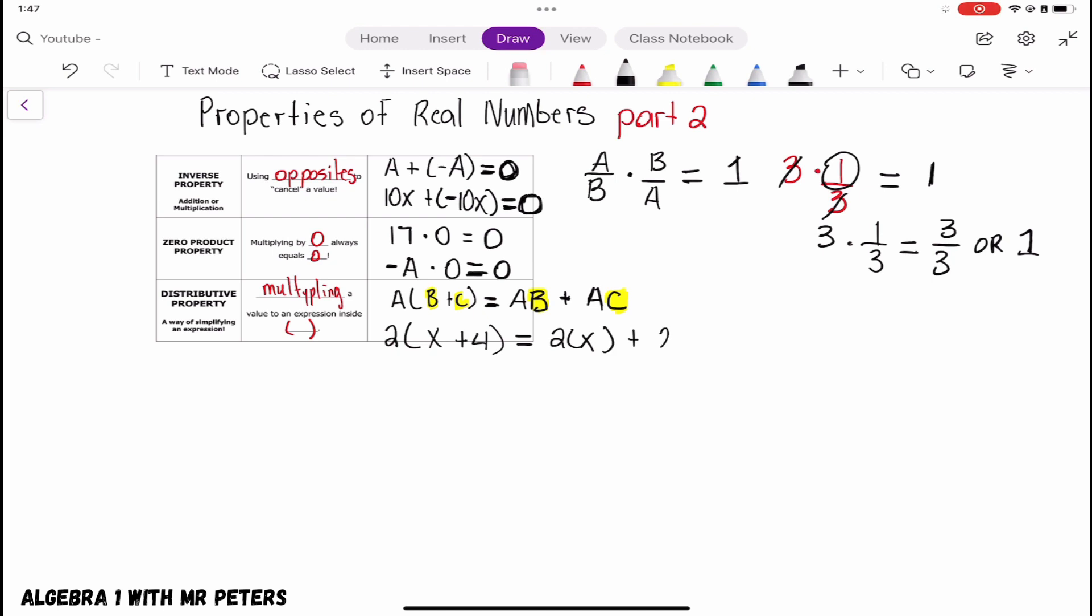Now when we simplify this again, we're going to have 2X plus 8. And at this step we're going to stop right there because we know that 2X and 8 are not like terms. There is nothing else for us to do.